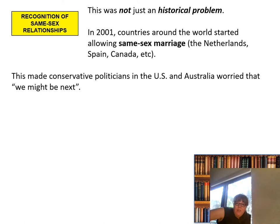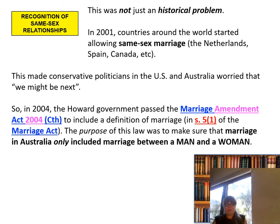This made conservative politicians in the United States and Australia worried — we might be next. So in 2004, the Howard government passed the Marriage Amendment Act to include a definition of marriage in Section 5.1 of the Marriage Act. The purpose of this law was to make sure that marriage in Australia only included marriage between a man and a woman.